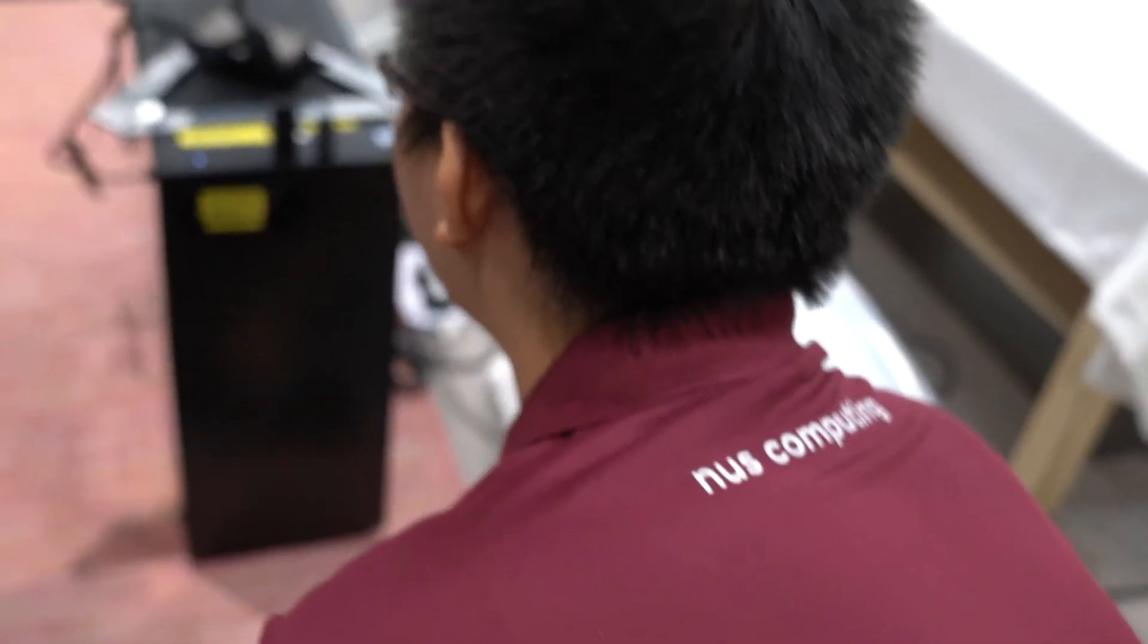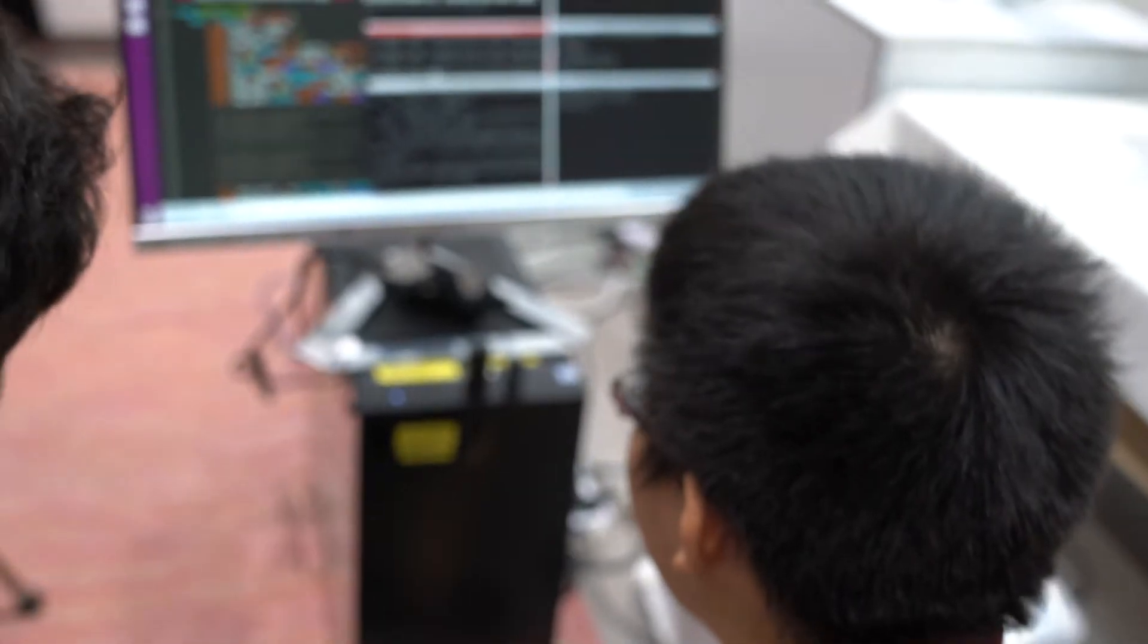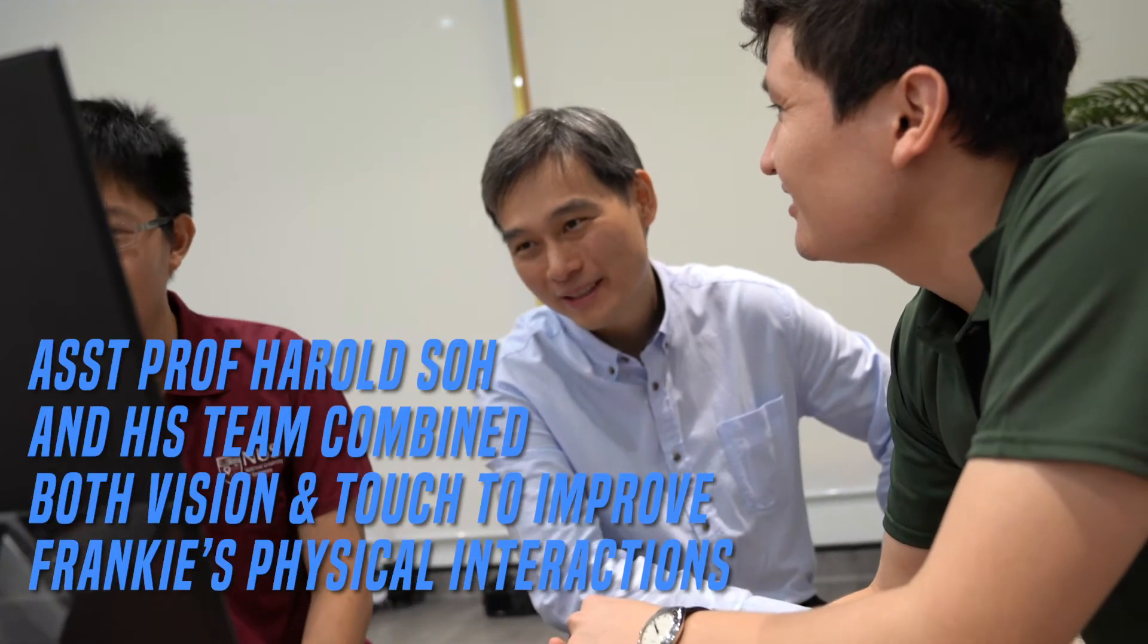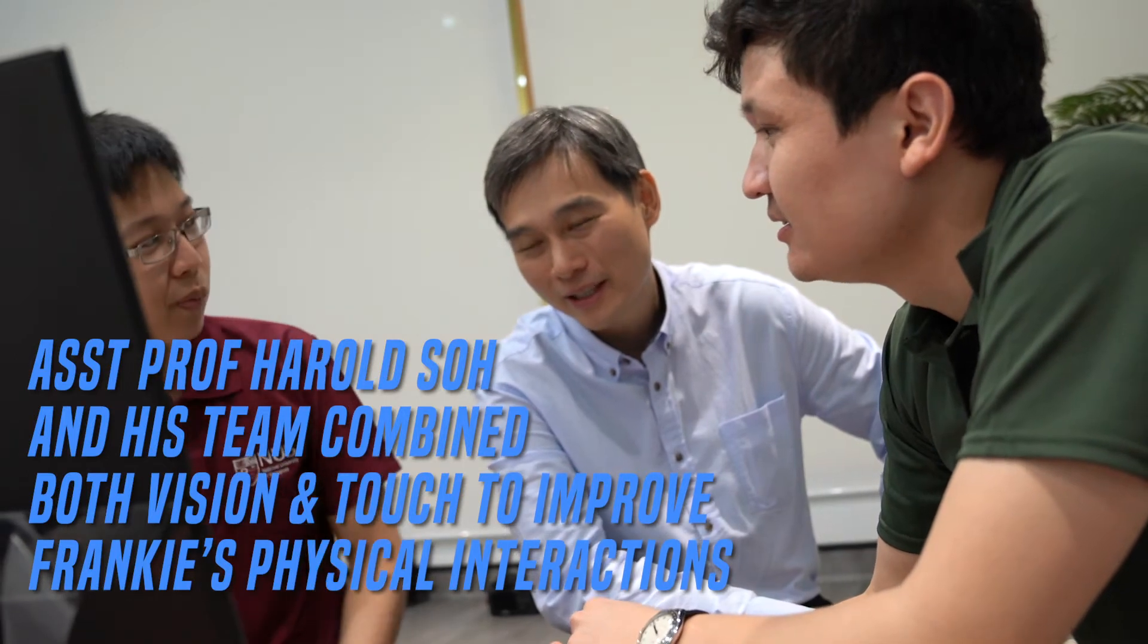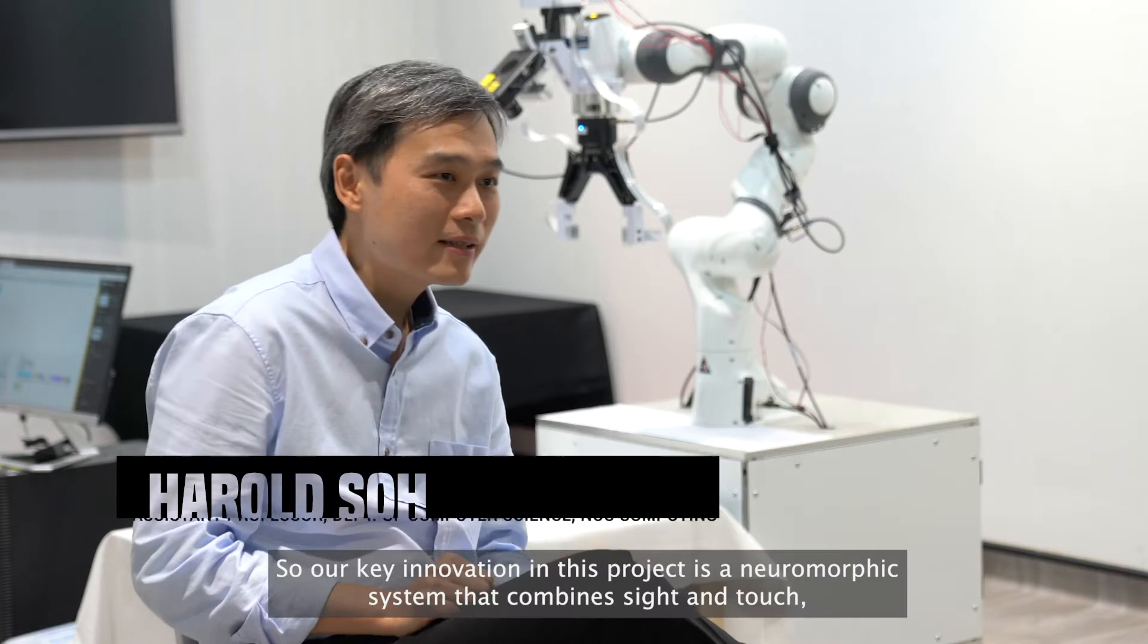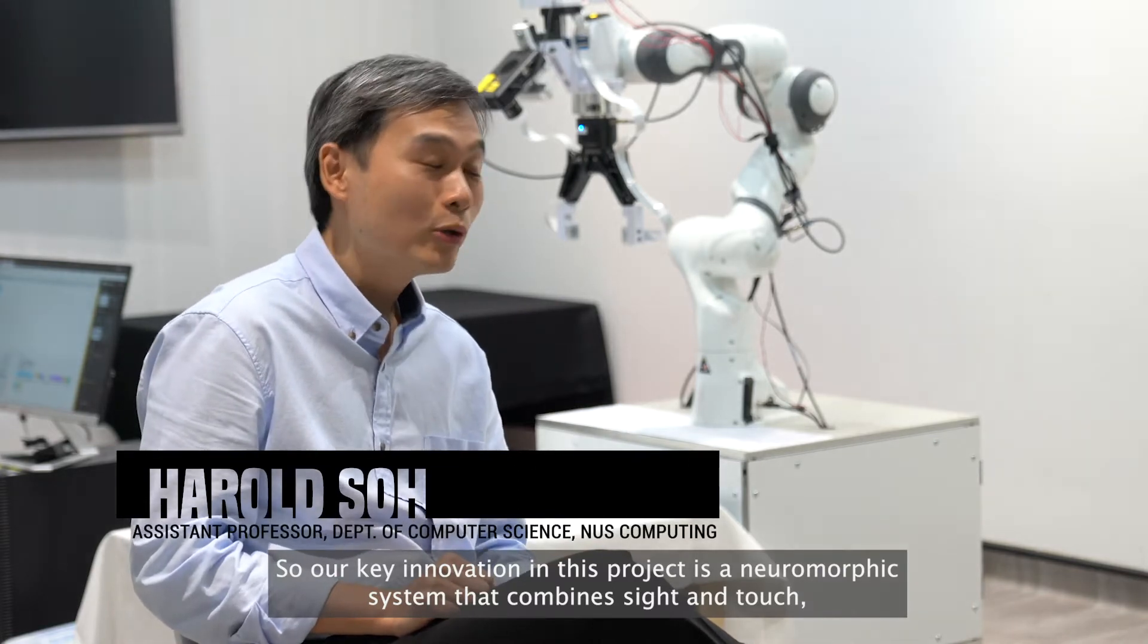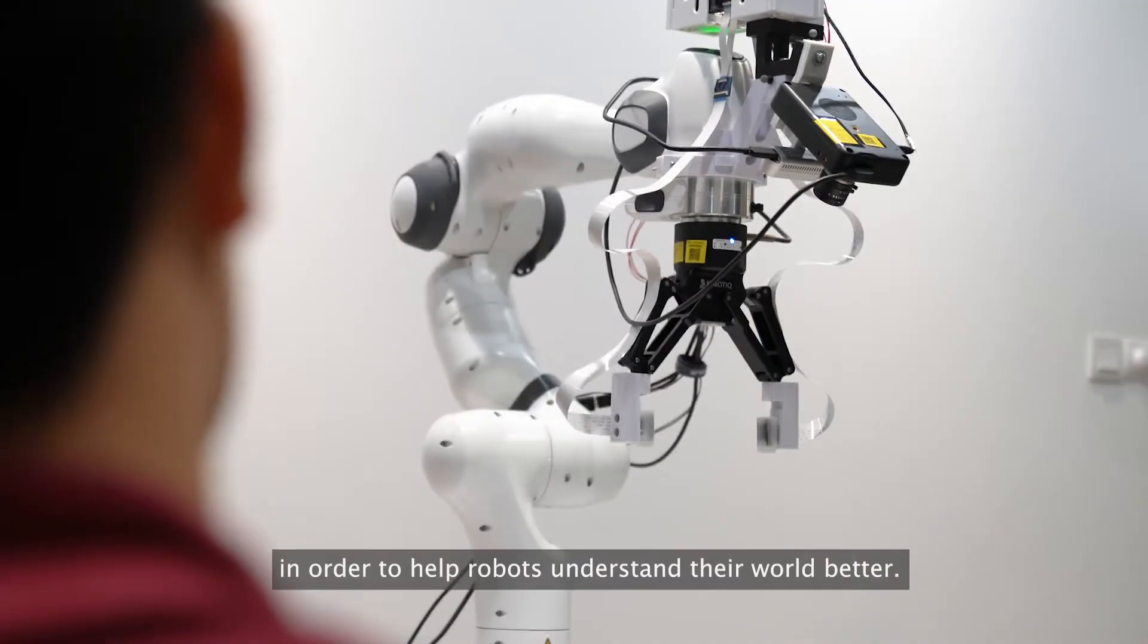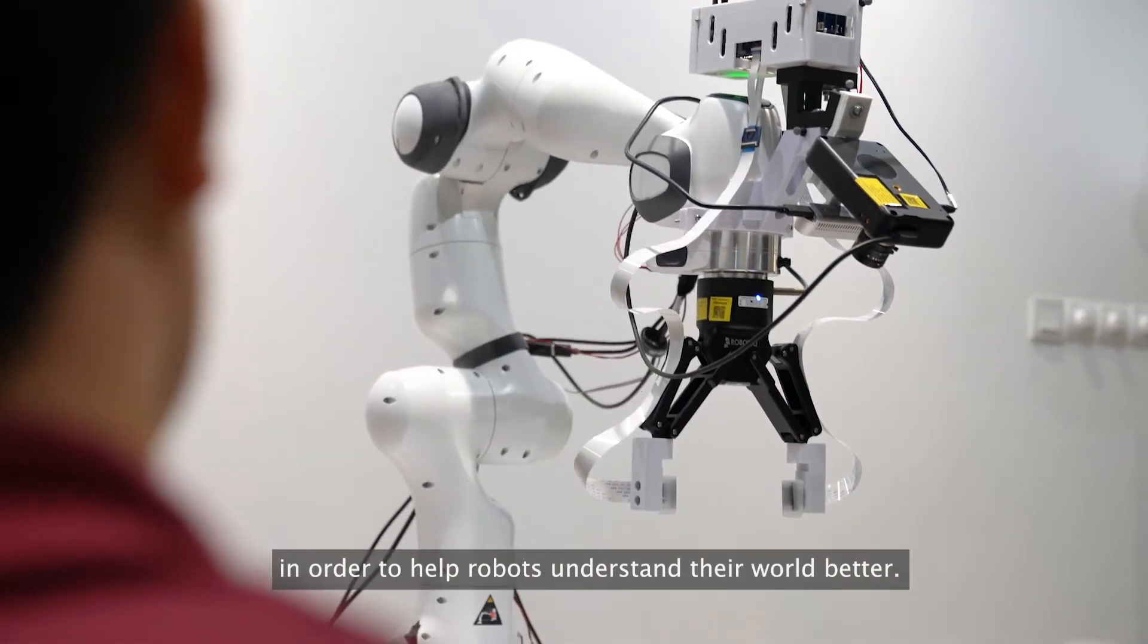A key innovation in this project is a neuromorphic system that combines sight and touch in order to help robots understand their world better.